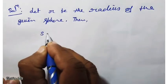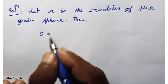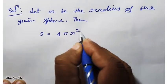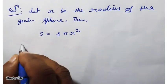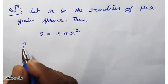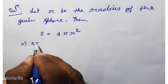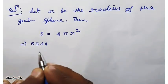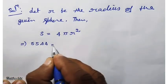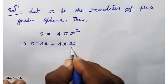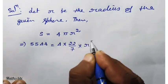Then, surface area of a sphere, S equals 4 pi R square. Implies that S, the surface area given is 5544 square centimeter, equals 4 pi. Pi we use 22 upon 7 into R square.